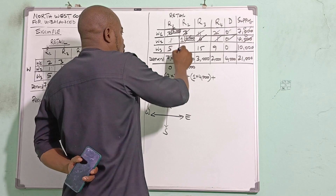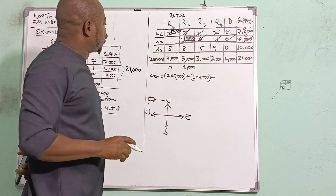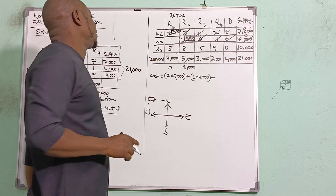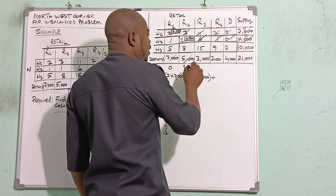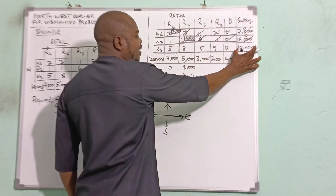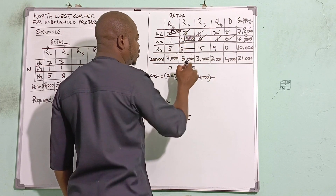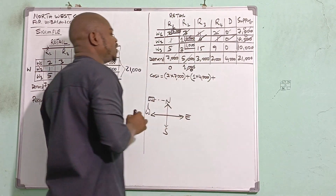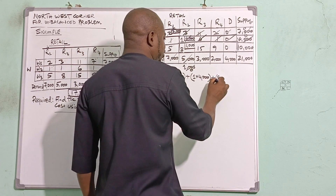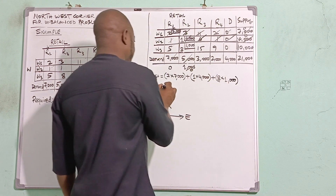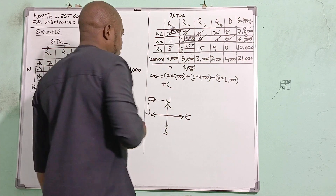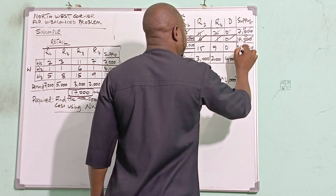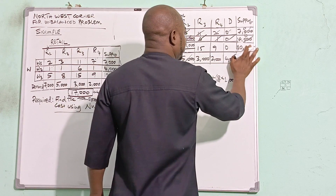The new Northwest Corner in the remaining portion has 1,000 still needed for Retail 2. W3 has 10,000 capacity, so I take 1,000 from W3 to exhaust that demand. I record 8 × 1,000. W3 now has 9,000 remaining, and the Retail 2 column is cancelled.